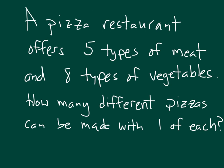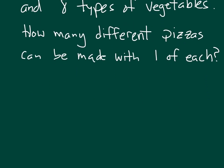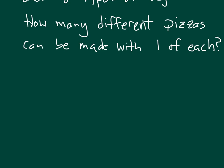We have a pizza restaurant with five types of meat and eight types of vegetables. How many different pizzas can be made with one type of meat and one type of vegetable? Before we use the fundamental counting principle, let's think about listing out all the possibilities.